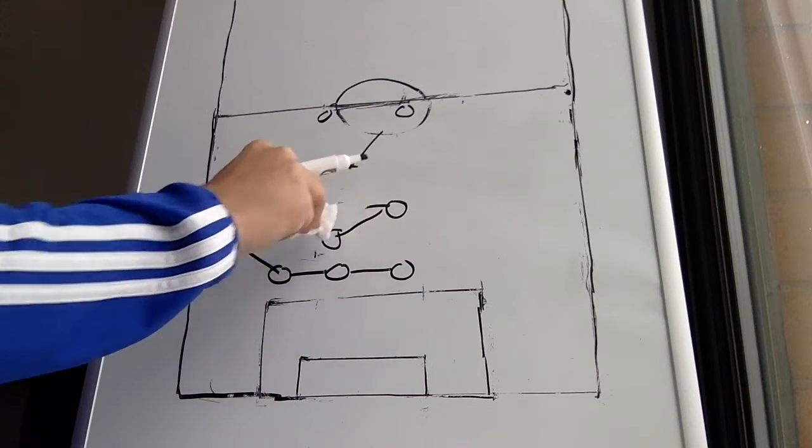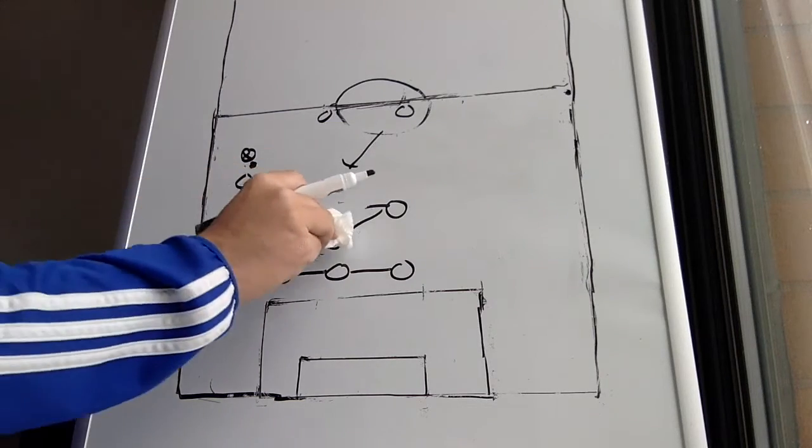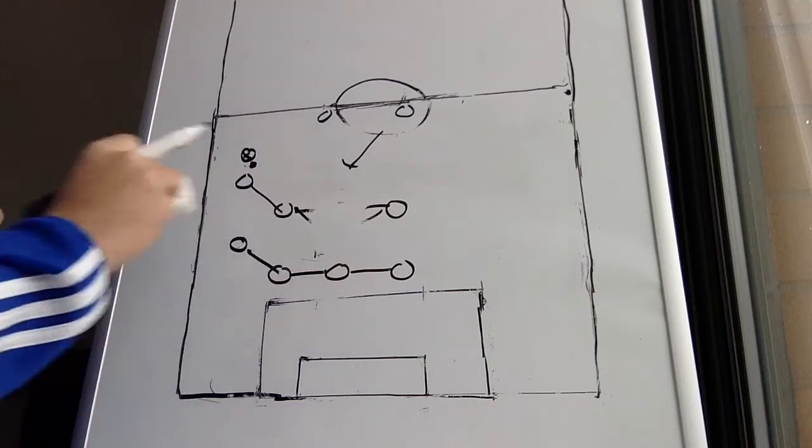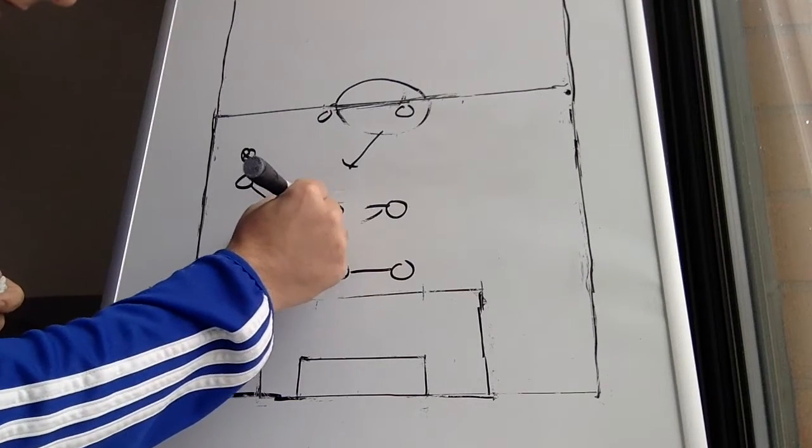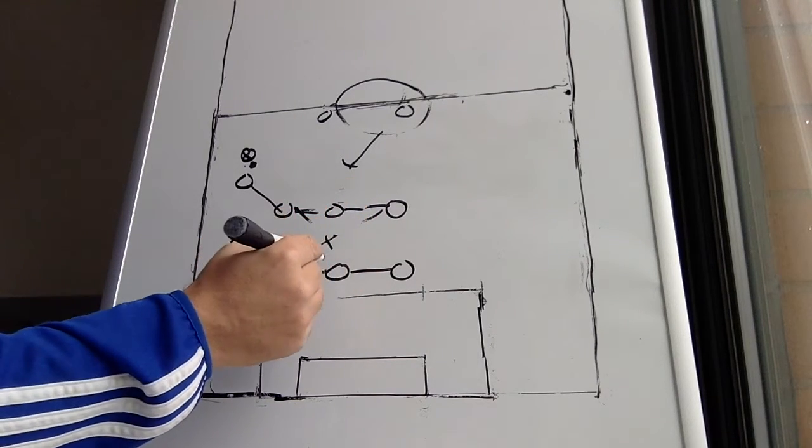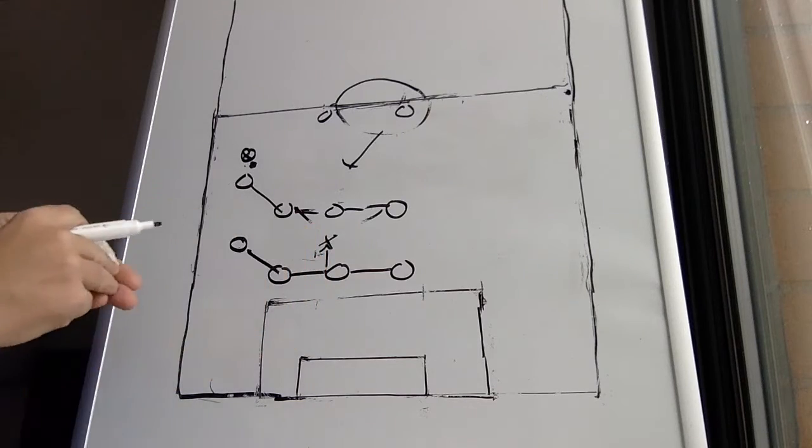So now he's taking up the space in between the lines. And essentially what happens is, if you had a striker right here sitting in between the lines, the center back is going to have to step up.